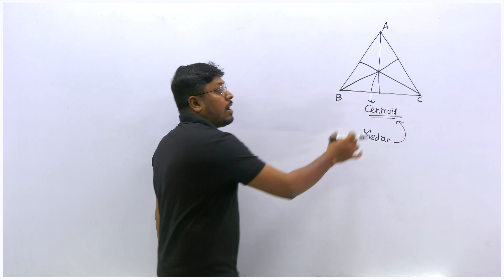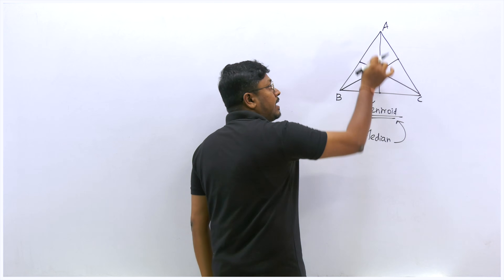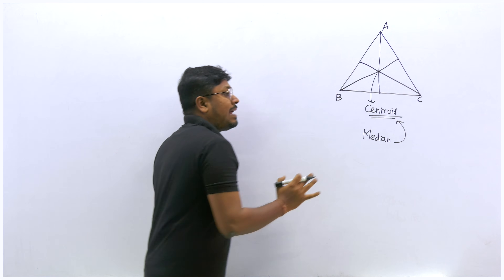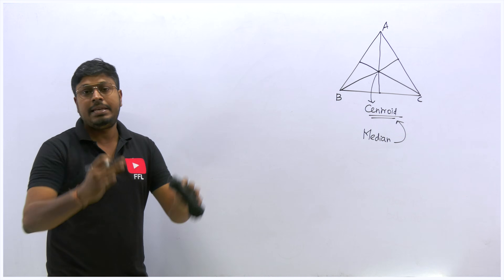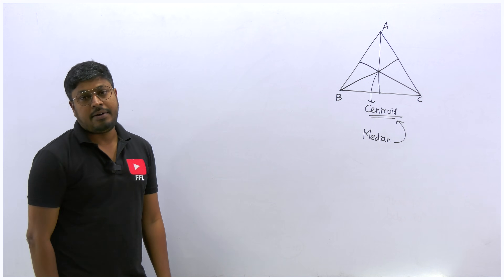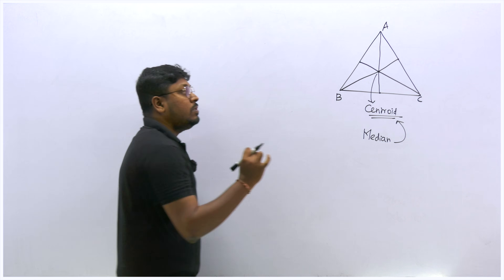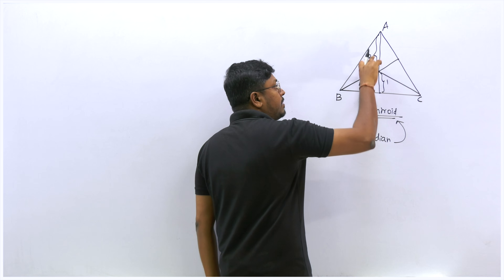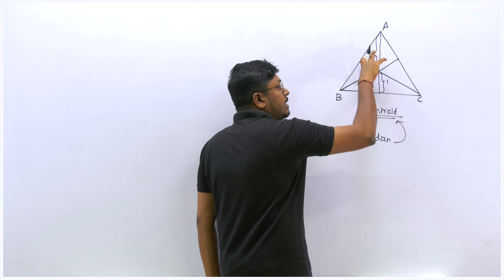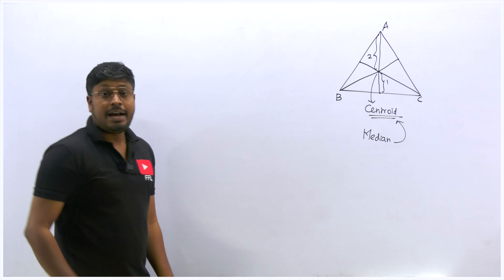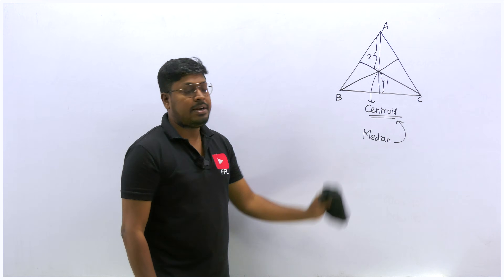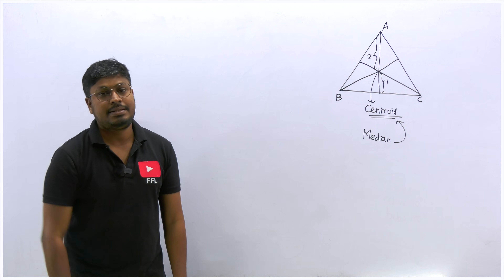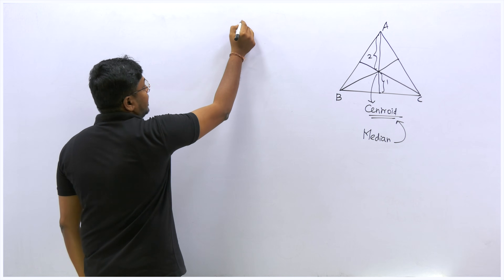A median connects a vertex to the midpoint of the opposite side. The median splits the triangle into two equal halves; drawing three medians splits it into six equal parts. One important property: the centroid divides each median in the ratio 2:1 — the longer portion is from the vertex to the centroid, and the shorter portion is from the centroid to the midpoint. This point where the three medians meet is called the centroid.